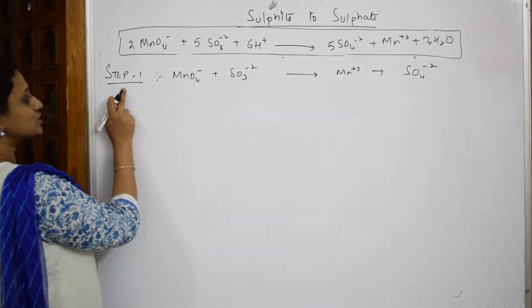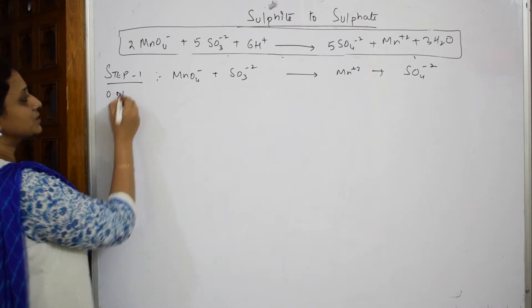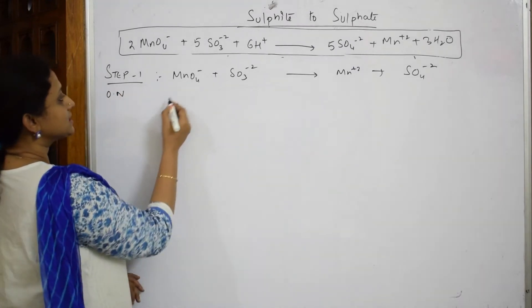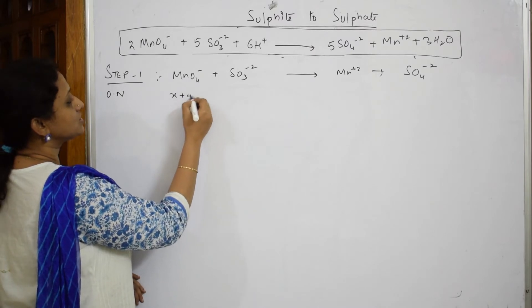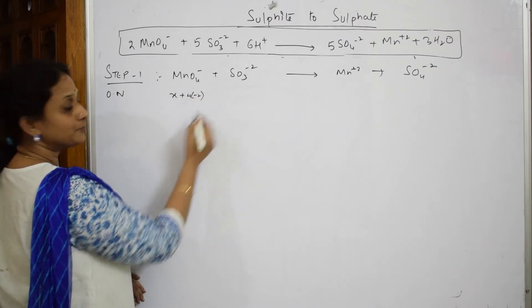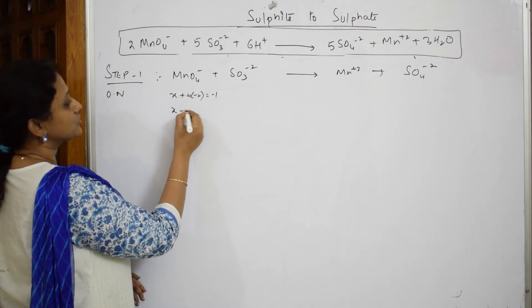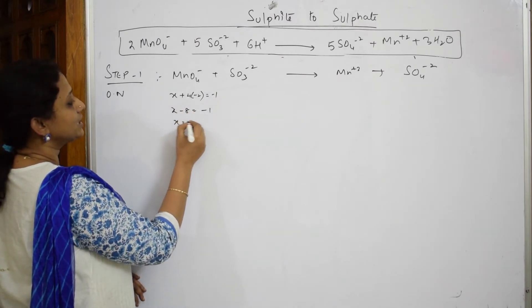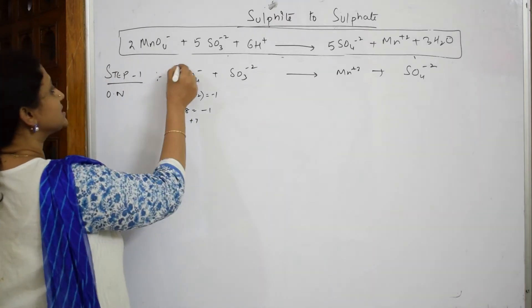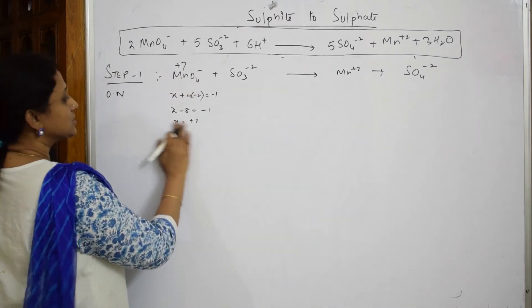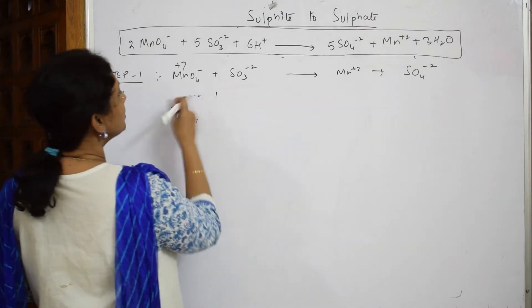In step one first you have to calculate oxidation numbers. Start calculating: this is X, 4 times oxygen valence is minus 2, and minus 1. If I have to solve this I am going to get X is equal to plus 7. Take this plus 7 and write it here.